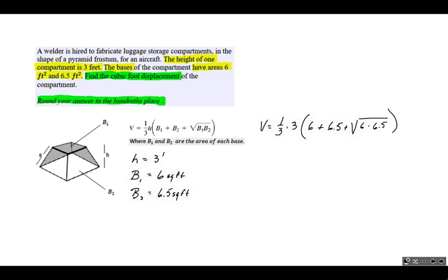Let's solve that square root. 6 times 6.5 turns out to be 39. The square root of 39 is a long decimal value. Since we need to round to the hundredths place, let's take that out to four decimal places: 6.2450. That will allow us to round with accuracy to two decimal places.